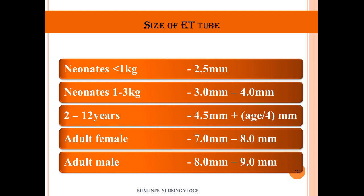ET tube sizes by age group: neonates less than 1 kg use size 2.5; neonates 1–3 kg use 3 to 4; age 2 to 12 years use 4.5 plus age divided by 4. Adult female is 7 to 8, and adult male is 8 to 9. In practical experience, for pediatrics the formula 4 plus age divided by 4 is used; for females mostly 7 to 7.5, and for adult males usually 7.5 to 8.